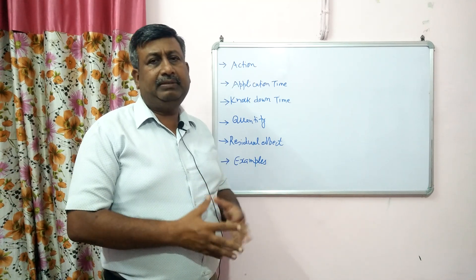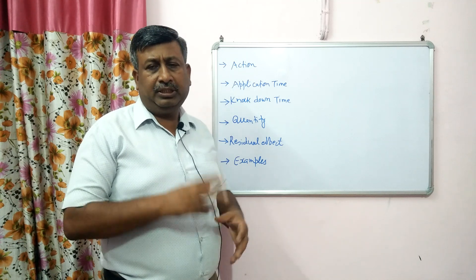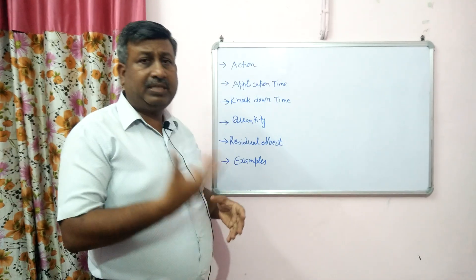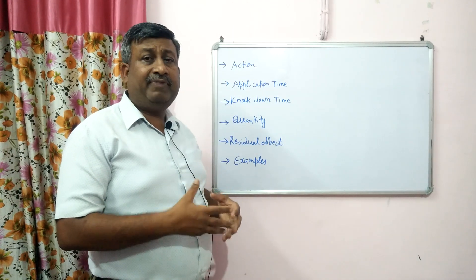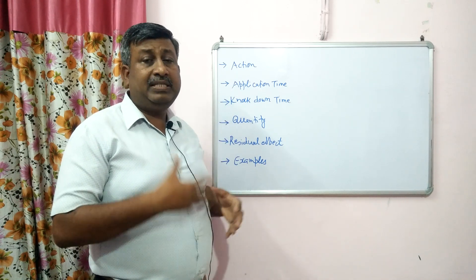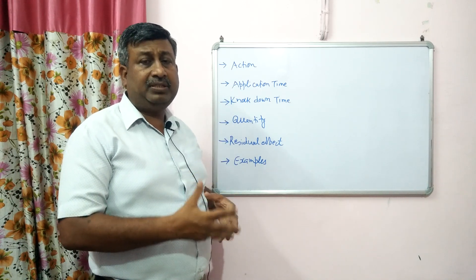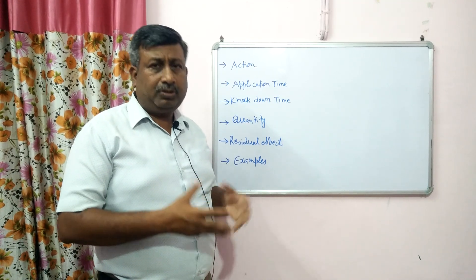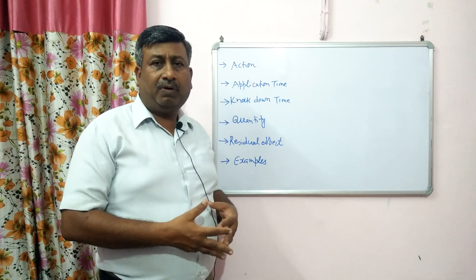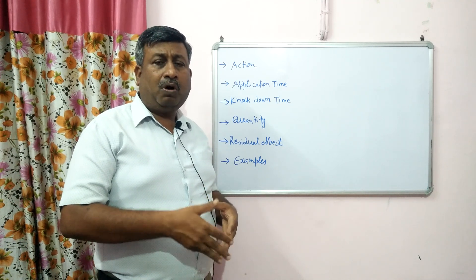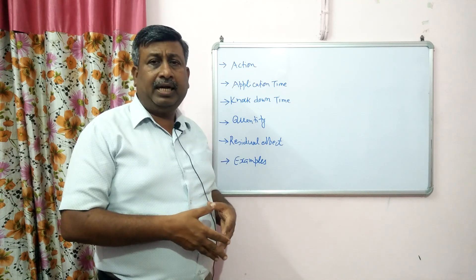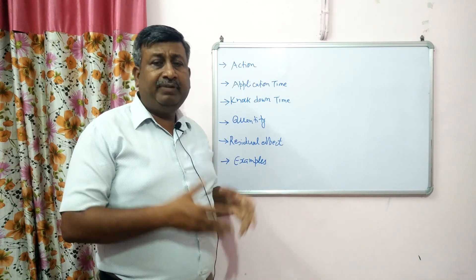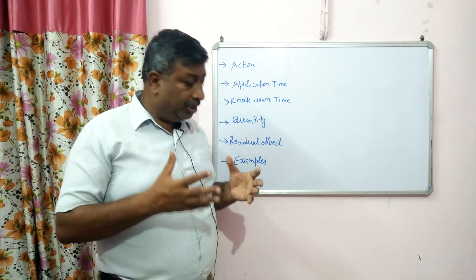One of the categories is contact and systemic herbicide, and we are often confused between these two types. The basic differences relate to their mode of action, application time, knockdown time (how fast the killing action is), quantity required, residual effect in the soil, and the situations in which each type is used.